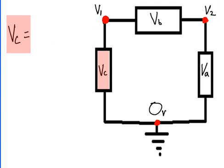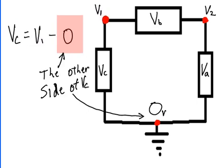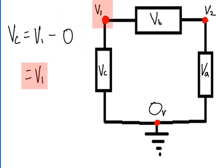Let's do device C. VC equals V1 minus 0, which is the other side of VC, which equals V1. Because V1 minus 0 equals V1.